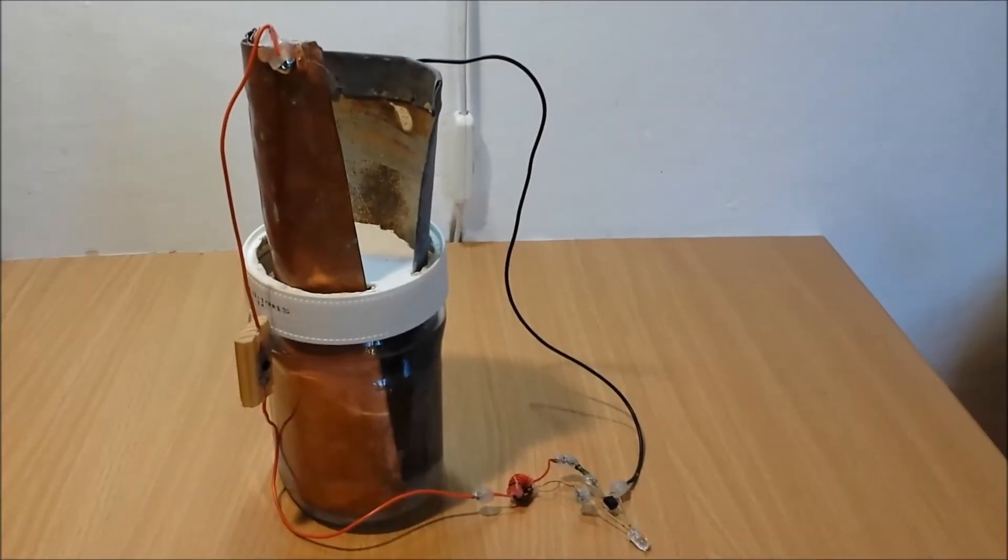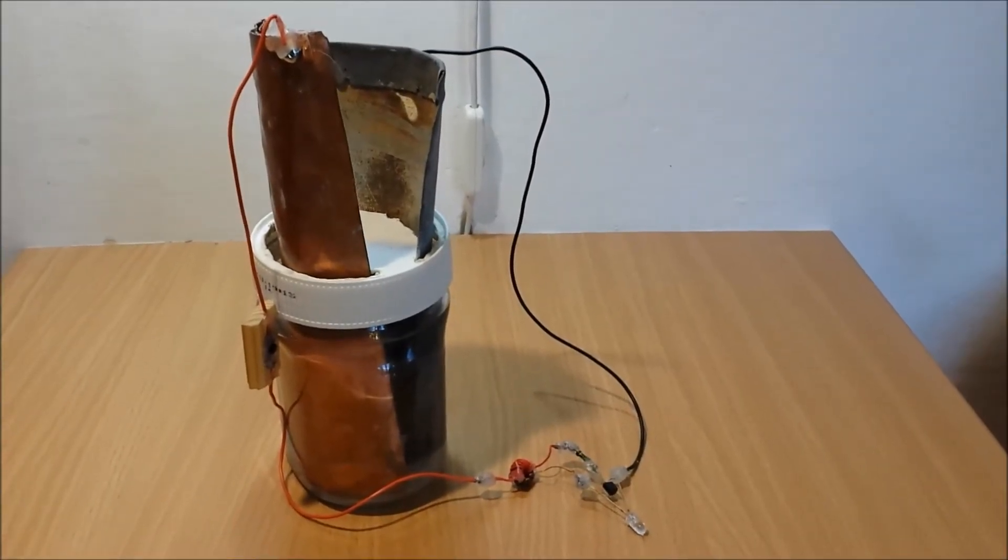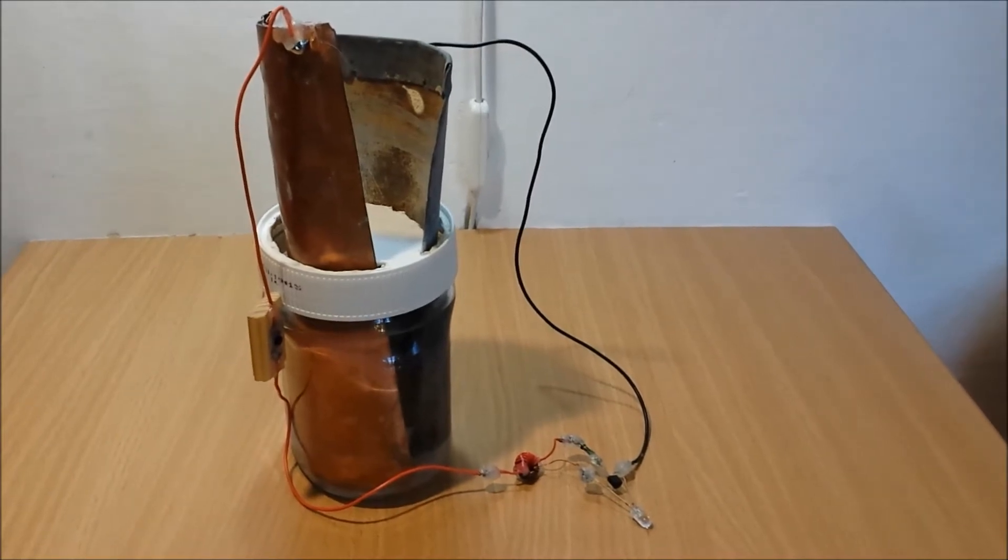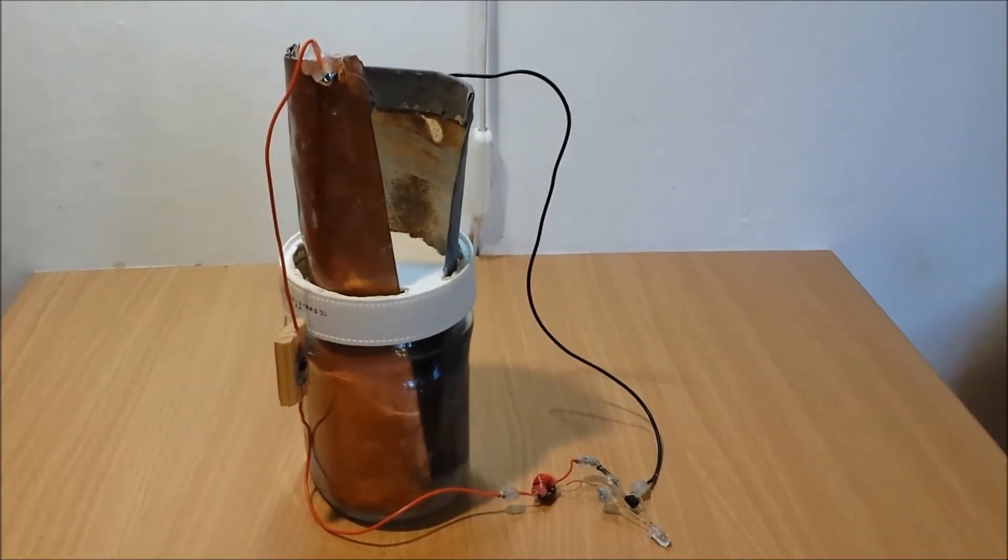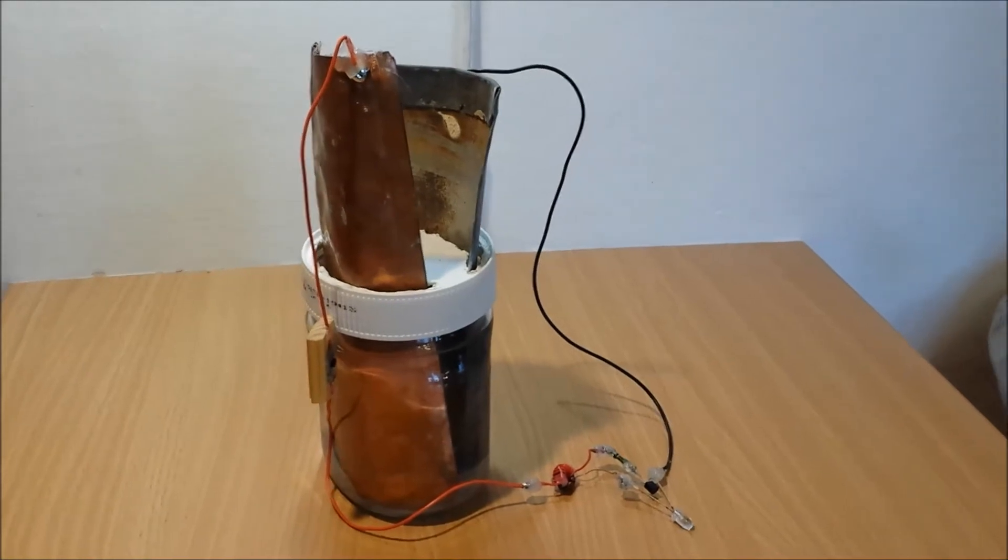This experiment shows the principle of function of a galvanic cell, also called a voltaic cell. It serves as a source of voltage by changing chemical energy to electric energy.